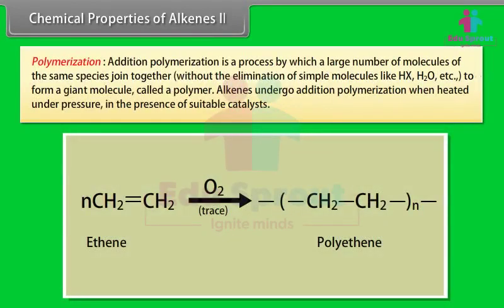Polymerization: addition polymerization is a process by which a large number of molecules of the same species join together without the elimination of simple molecules like HX or H2O, to form a giant molecule called a polymer. Alkenes undergo addition polymerization when heated under pressure with suitable catalysts. When ethene is heated to 1000°C under 1000 atmospheric pressure in the presence of oxygen, we get polyethene.